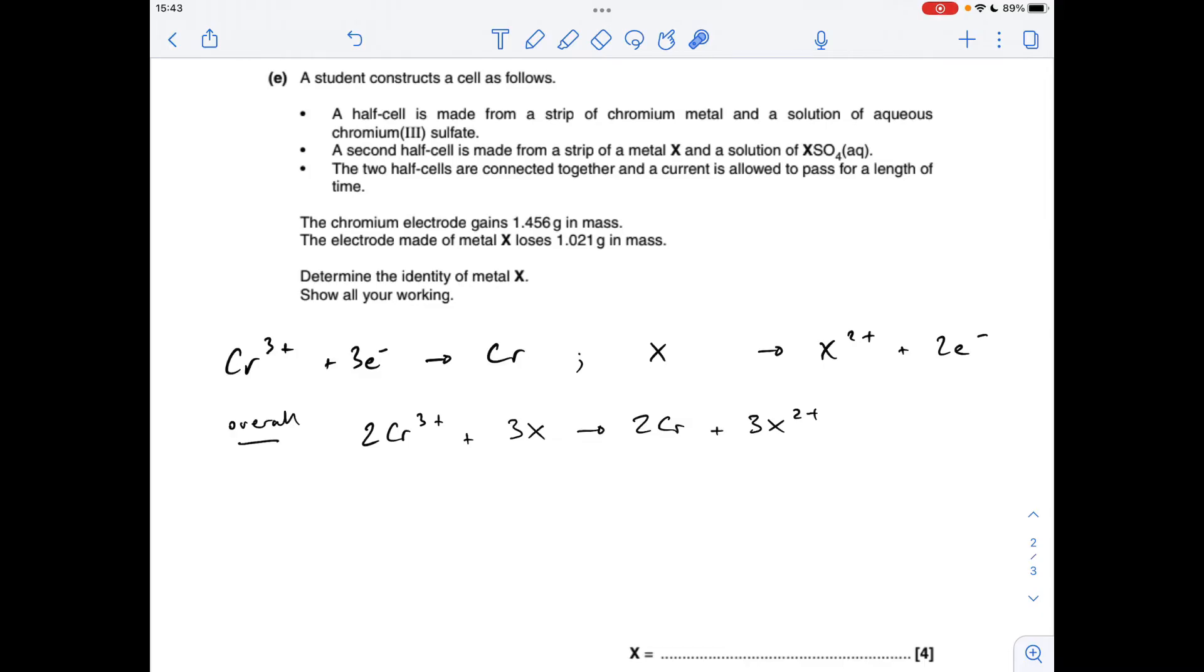So we're told that the chromium electrode gains mass. That's implying that the Cr³⁺ ions are gaining the three electrons and becoming chromium. And we're also told that the electrode made of metal X loses mass, so obviously the X atoms are turning into X²⁺ ions and obviously giving up two electrons in the process.